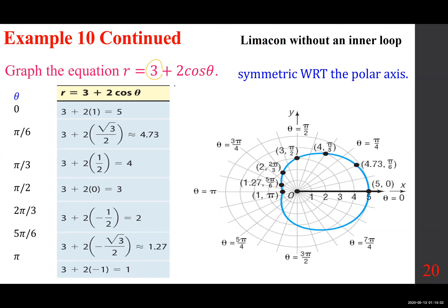These two numbers I'm referring to — if the absolute value of those two numbers are identical, it becomes a cardioid. If it's not, it's not. That's really the bottom line.